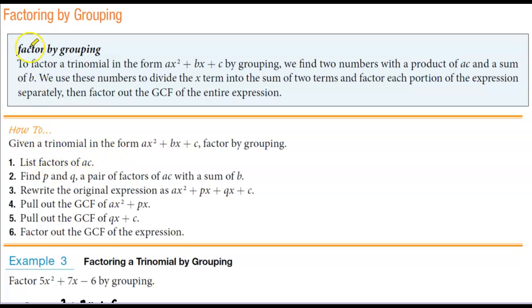When we're using factoring by grouping, which is also called the AC method, that's when the leading coefficient is not 1.